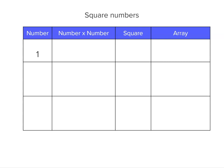So let's take the number 1. The square of 1 is 1 times 1, which is 1. And for the array, you're not going to see it straight away, but you will start to see it looking like a square soon.